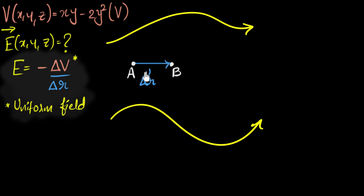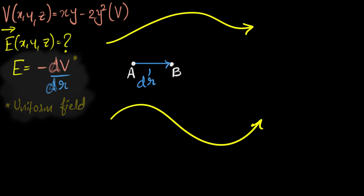In that case, this distance delta R becomes an infinitesimal, and we often write it as dr. Then you calculate how much the potential drops — that'll be an infinitesimal drop, dV. Then you do negative dV over dr, and that'll give you the electric field at that point. The only change we have to make is using dV over dr, and now this will work for any field.